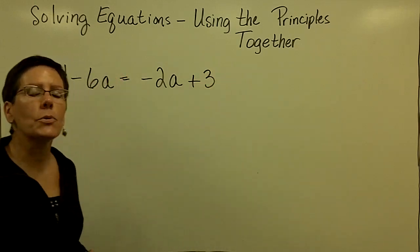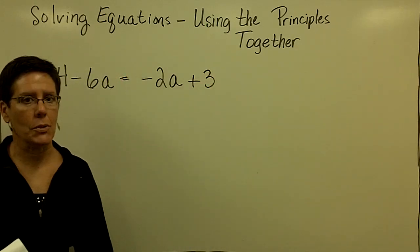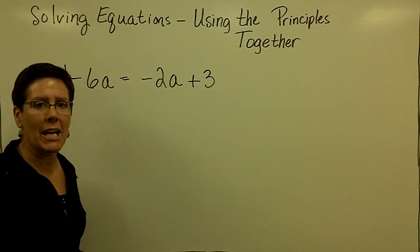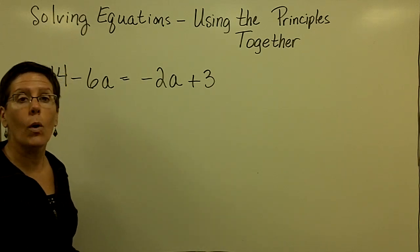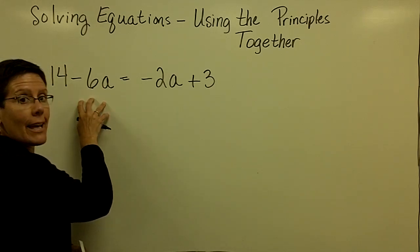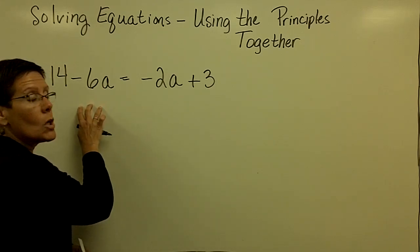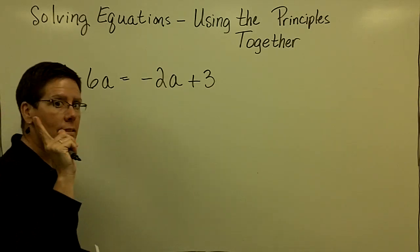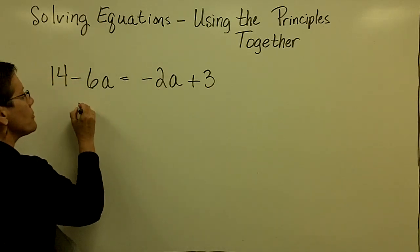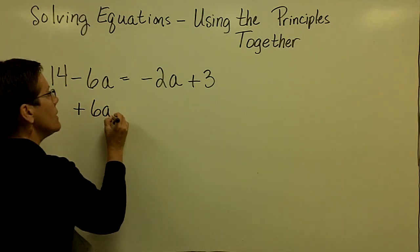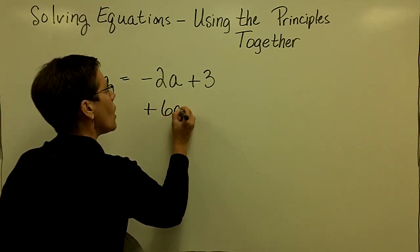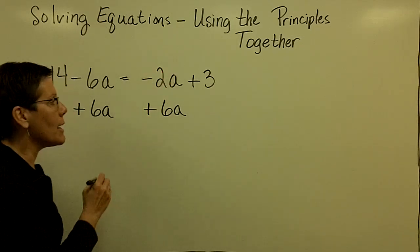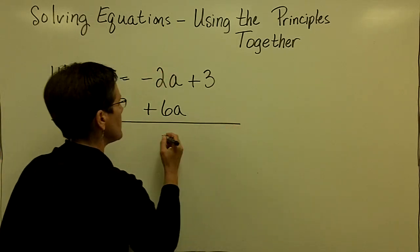So as you're trying to get used to my methods, if you want to use them, I'm focusing on the variable terms first. I want to isolate them and get them on one side. So I'm going to either add 6a to both sides or I'm going to add 2a to both sides. It doesn't matter, but I prefer to add 6a to both sides because that will cause these right here to add to be a positive 4a. And I love positive numbers.